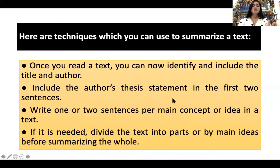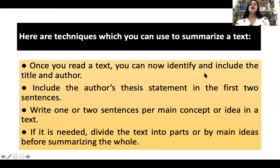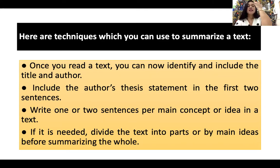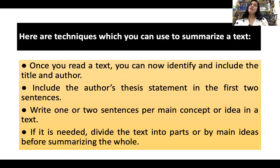Here are the steps you can use to summarize a text. Once you read a text, you can now identify and include the title and the author — that's the first step. Then include the author's thesis statement in the first two sentences. Basically, after the title and the author, you will state the thesis statement, which is the overall concept of what the text is all about.